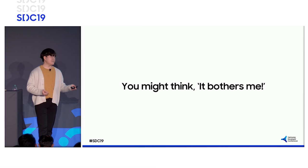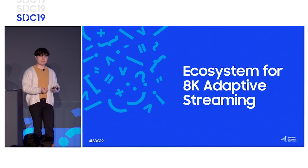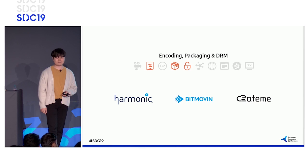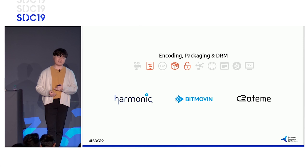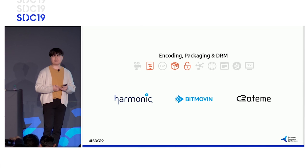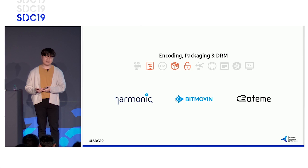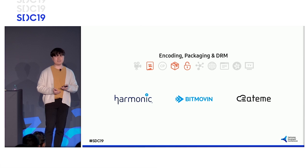You might find these guidelines burdensome. This year, we've also prepared the ecosystem for 8K streaming. Encoding and packaging are part of the ecosystem. We've worked with several encoding and packaging companies to create working streams and verify them on 8K TV. For example, Harmonic, Bitmovin, and Ateme cooperated with us. These partners generously provide resources to support 8K streaming, and I'd like to take this opportunity to thank them. We have verified compatibility through various combinations of streaming formats such as multi-audio and subtitles.